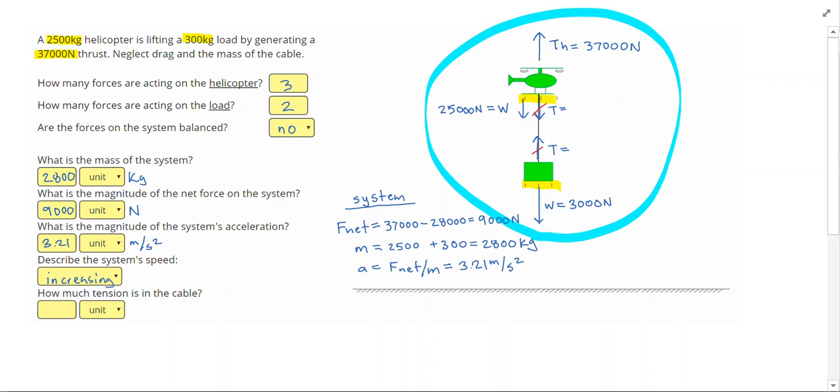So lastly, it asks us for the tension in the cable. To get the tension in the cable, well, the tensions cancel out if I look at both objects. But if I can just focus in on one object, I can find the tension in this cable.